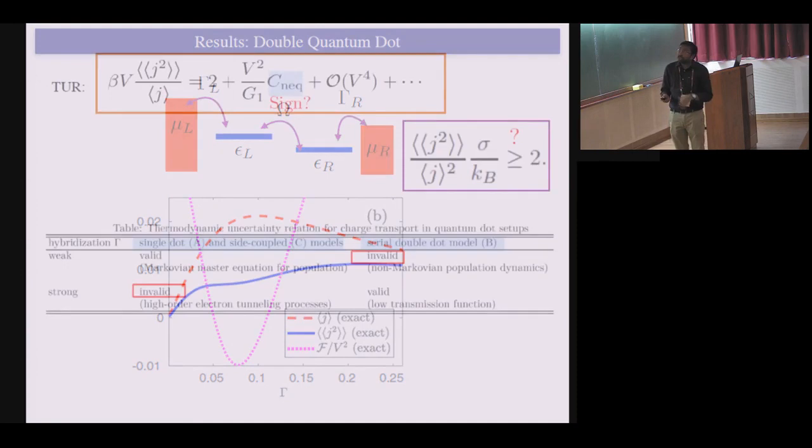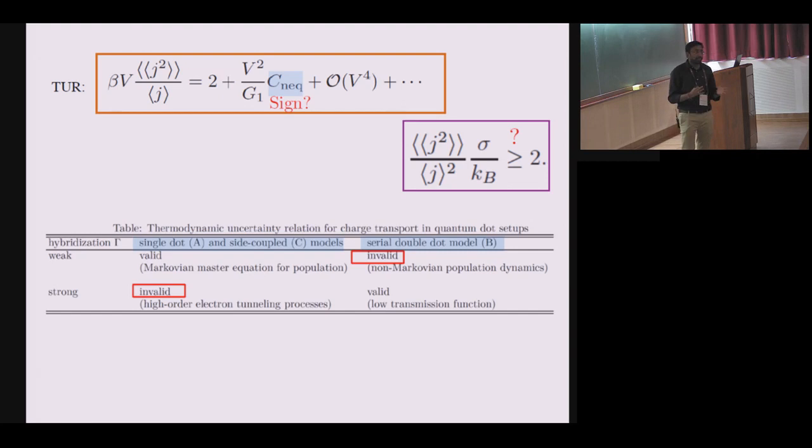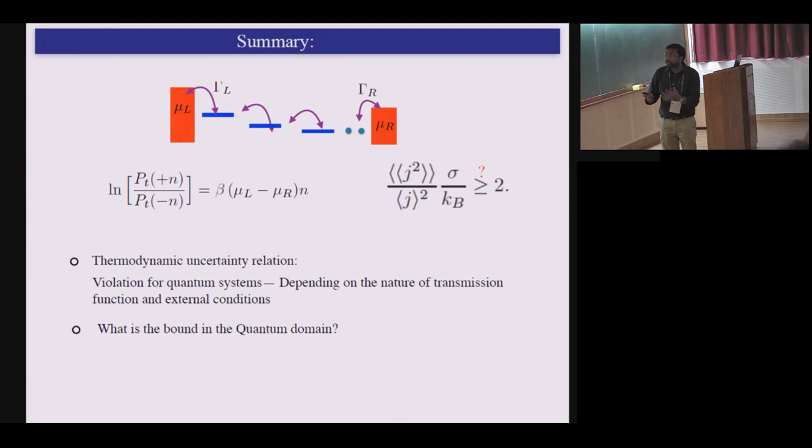So the whole idea is that the moment you sort of go beyond Markovian regime, it looks like this relation, the thermodynamic uncertainty bound is not really getting preserved. And this is sort of what we observed for different type of systems, either in the weak coupling or strong coupling. If you deviate from Markovian dynamics, you start to see violations. So this is kind of the summary.